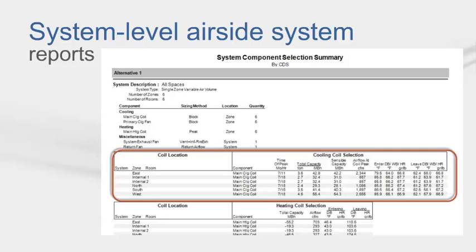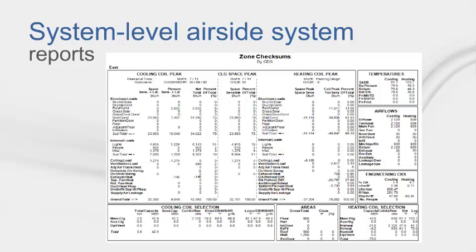After you have completed the rest of the model and finished calculating, you will want to look at the System Component Selection Report for all coil and fan sizing information. Note that we do not do coil selection in this program — we give you the tonnage and the entering and leaving temperatures. You can refer to the zone checksums or room checksums for VAV box sizing information, and the system checksums for supply fan, preheat coil, and main cooling coil sizing information. Note that some peak numbers, like air flows in your zone checksums, will not add up to what is shown in the system checksums, because the system checksums show the peak at one given time, not just the added-up values of all zone peaks.